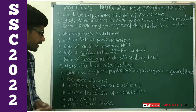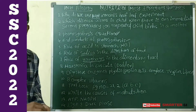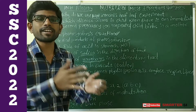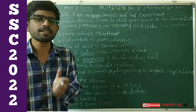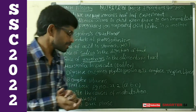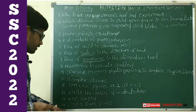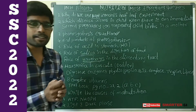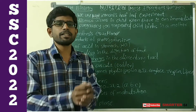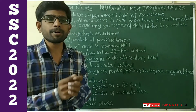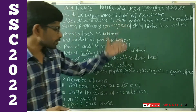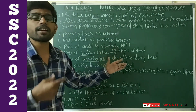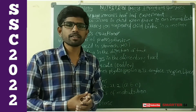Next, ATP and NADPH — what are their full forms? This is important for short answers. Also, the light and dark phase of photosynthesis is very, very important for short answers, and these questions can sometimes also appear as four-mark questions.